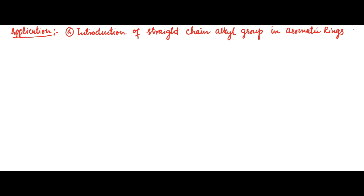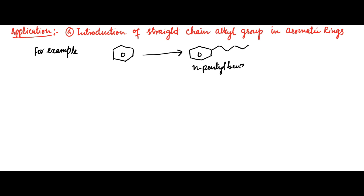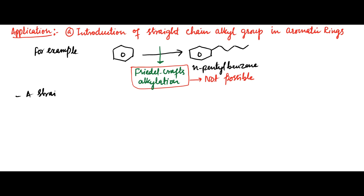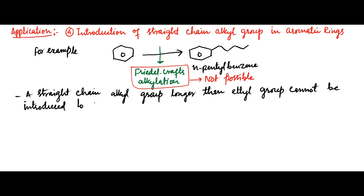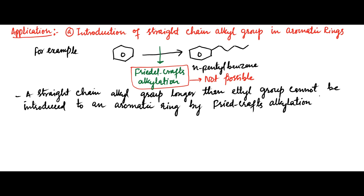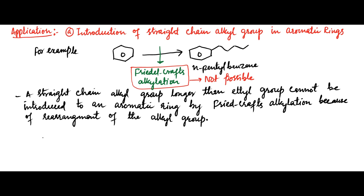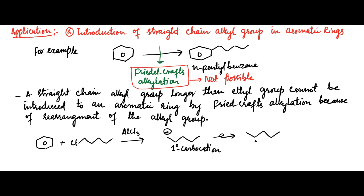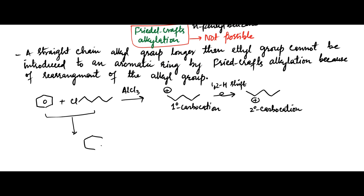An application of Wolf-Kishner reduction is the introduction of a straight-chain alkyl group on an aromatic ring. For example, to introduce an N-pentyl group on benzene, Friedel-Crafts alkylation is not possible because a straight-chain alkyl group longer than an ethyl group cannot be introduced to an aromatic ring by Friedel-Crafts alkylation due to rearrangement. If benzene is treated with N-pentyl chloride in the presence of AlCl3, the primary carbocation formed will immediately rearrange to a more stable secondary carbocation by a 1,2-hydrogen shift, giving a rearranged product.